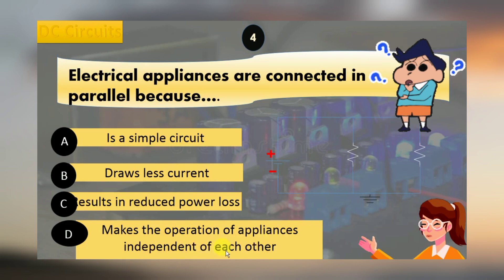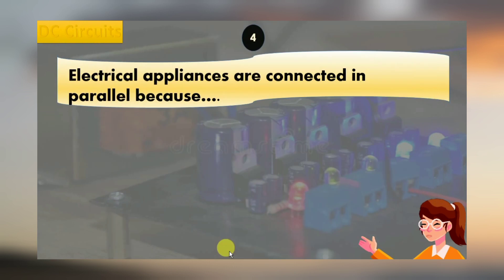The most prevalent type of circuit used in domestic electrical wiring is a parallel circuit, which provides a number of benefits over other types of circuits. Several electrical equipment are connected in parallel in a residential circuit for the following reasons.